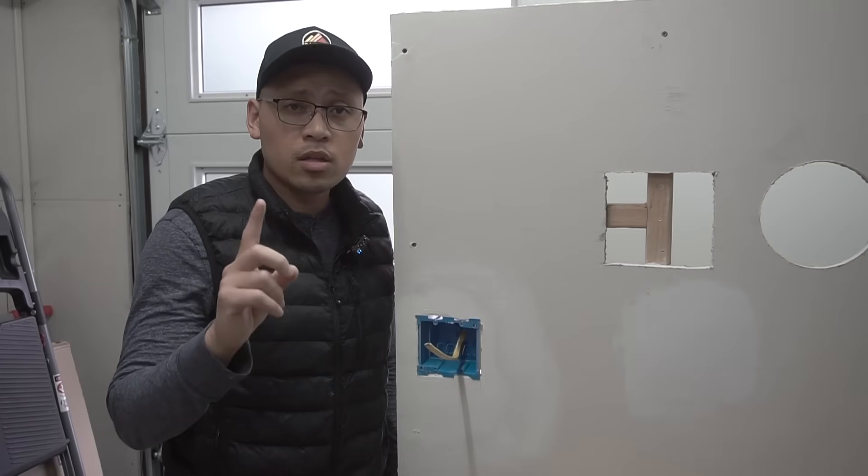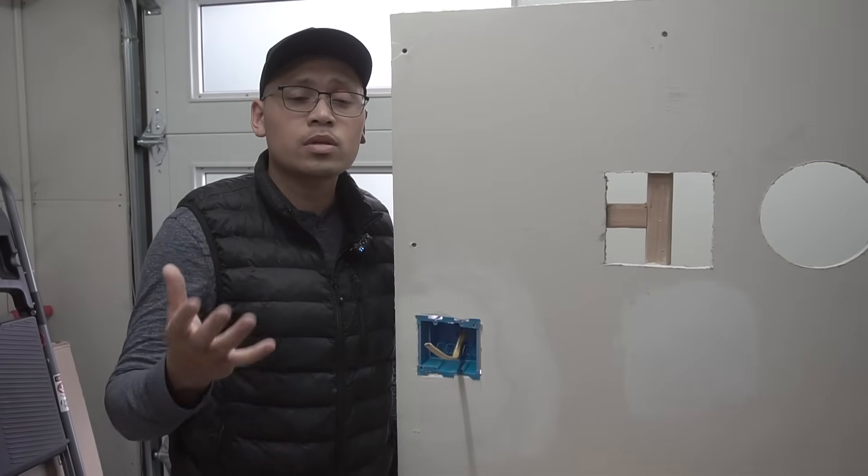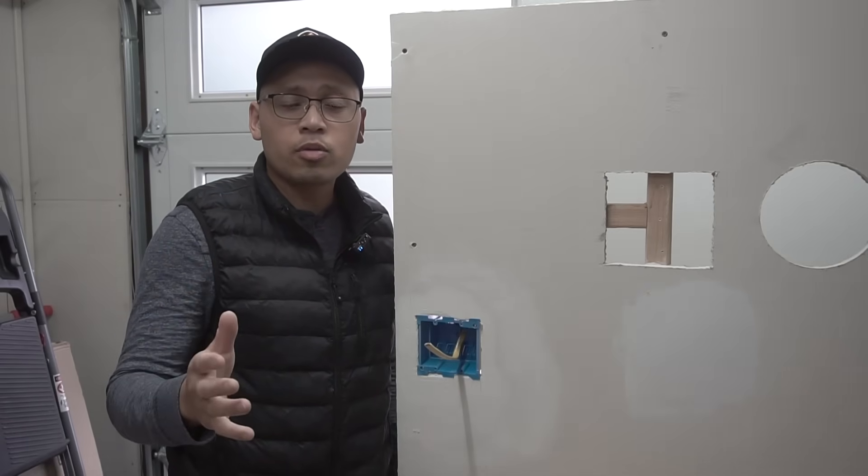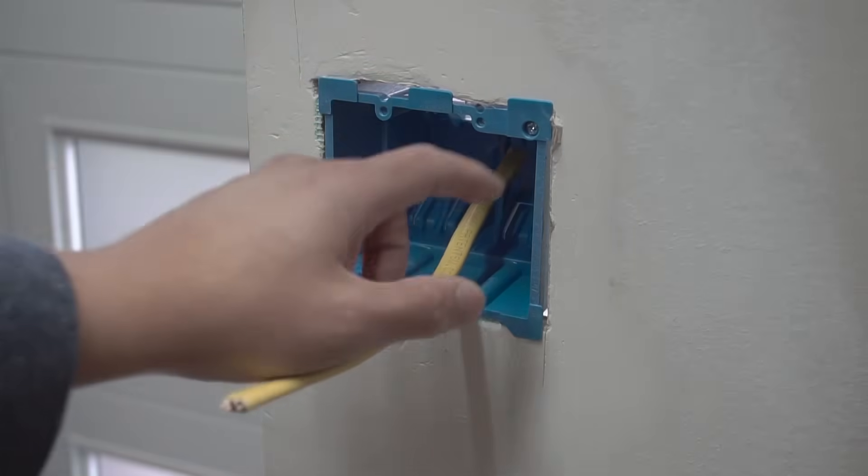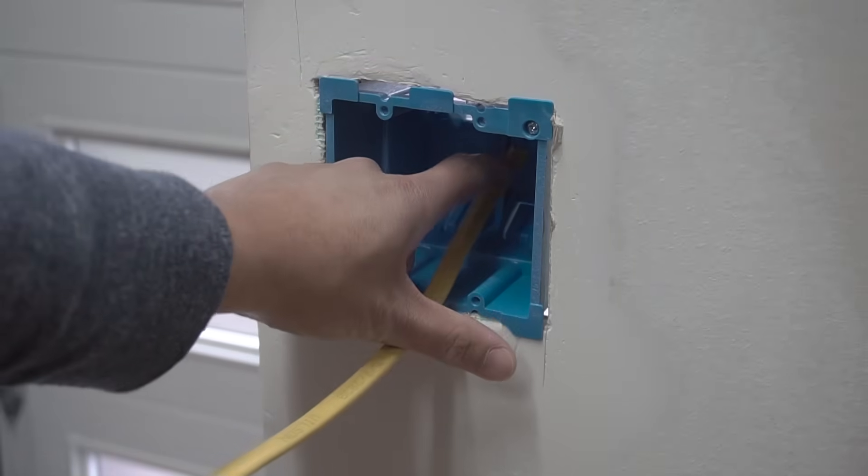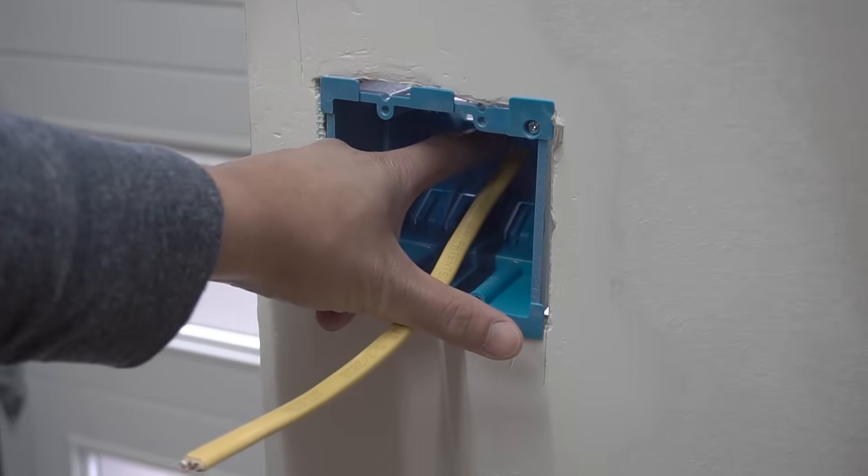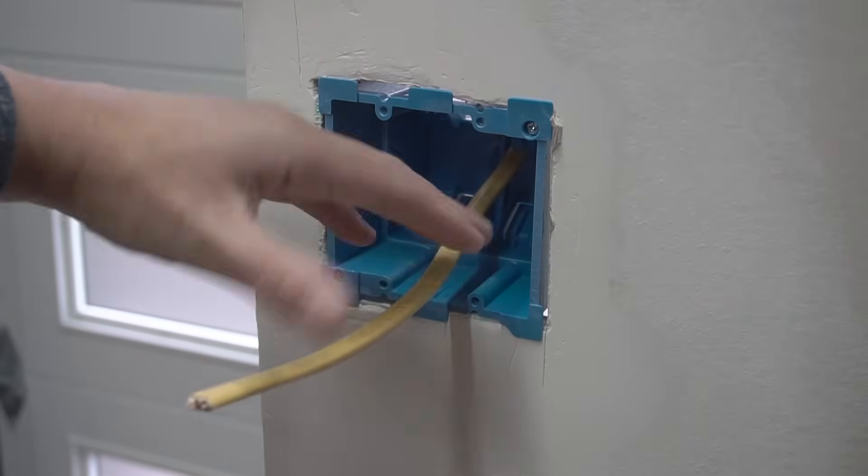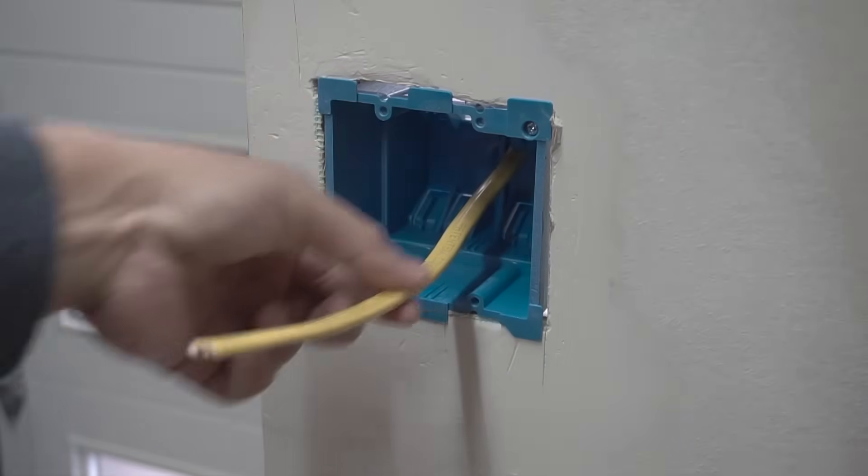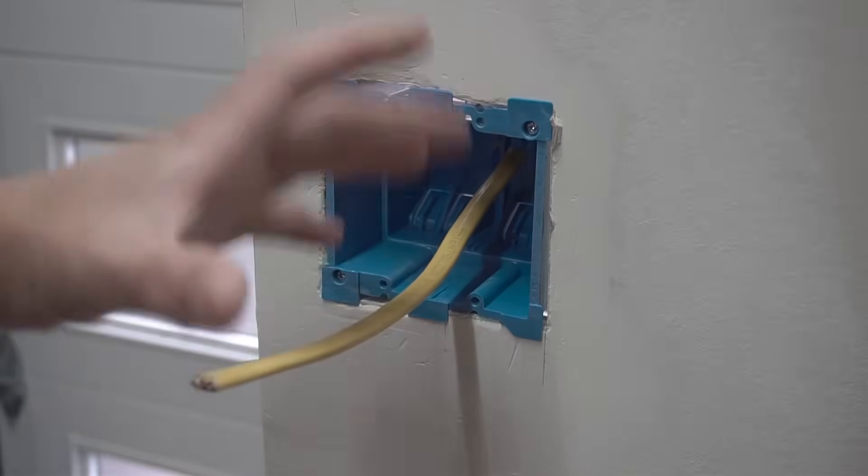So with that being said, let me show you method number one, which is probably the easiest and the most common way that we do it. So if you're not yet familiar with the code, you have to leave at least a quarter inch of sheathing past the clamp of where it enters through the box. Leave at least six inches of wire, and past the box, leave three inches of length of cable.